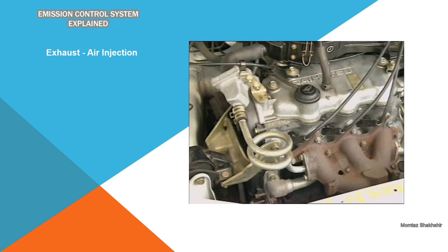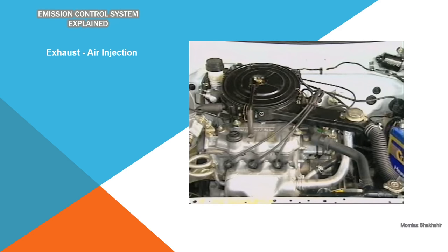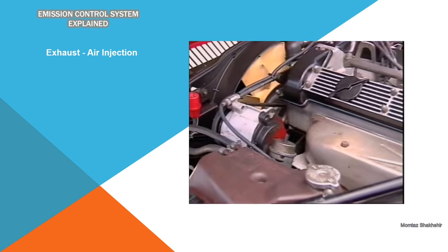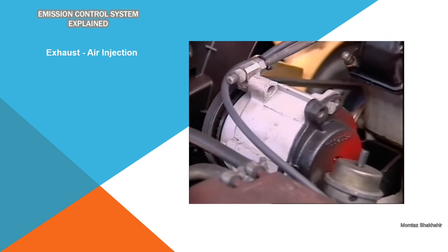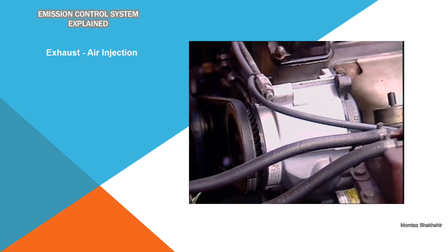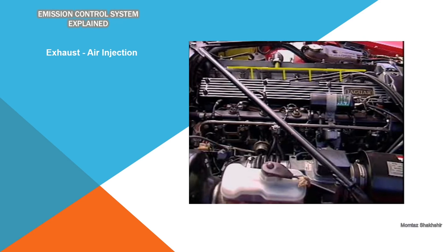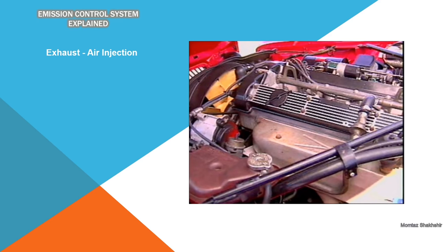The pulse air method uses the pulsations of the exhaust gas to open and close a reed valve, emitting air into the exhaust manifold in short bursts. Air drawn from the air filter enters the exhaust manifold. This method suits engines with four cylinders or less because their exhaust pulsations are further apart. Larger capacity engines may use an air pump to supply a larger volume of air, normally driven by a V-belt from the engine crankshaft and forcing air into the exhaust ports. Some of the engine's output is used in driving the pump.